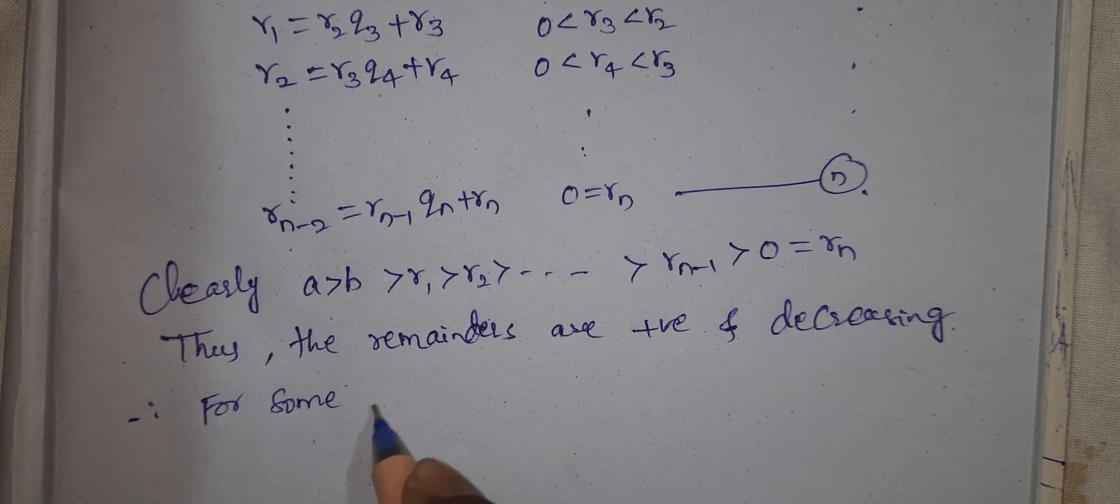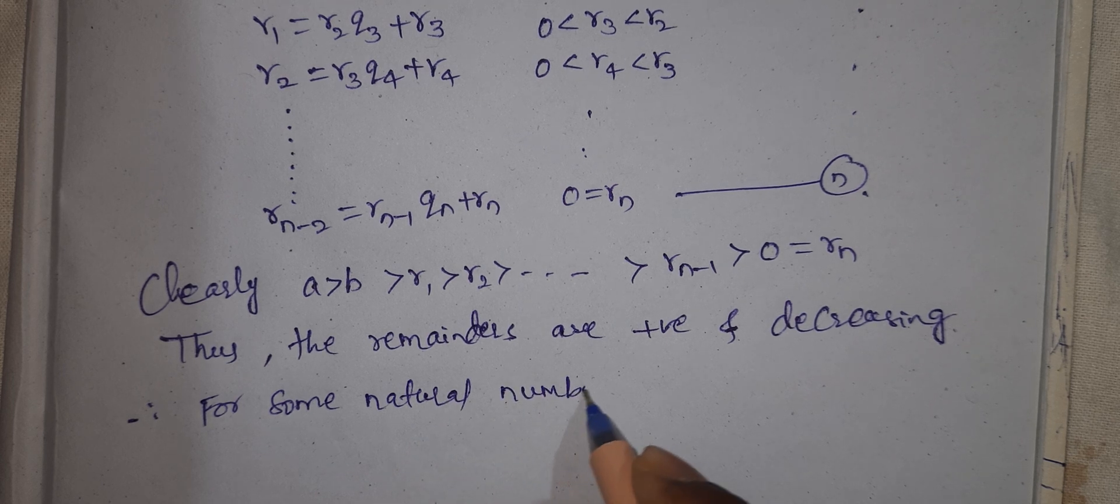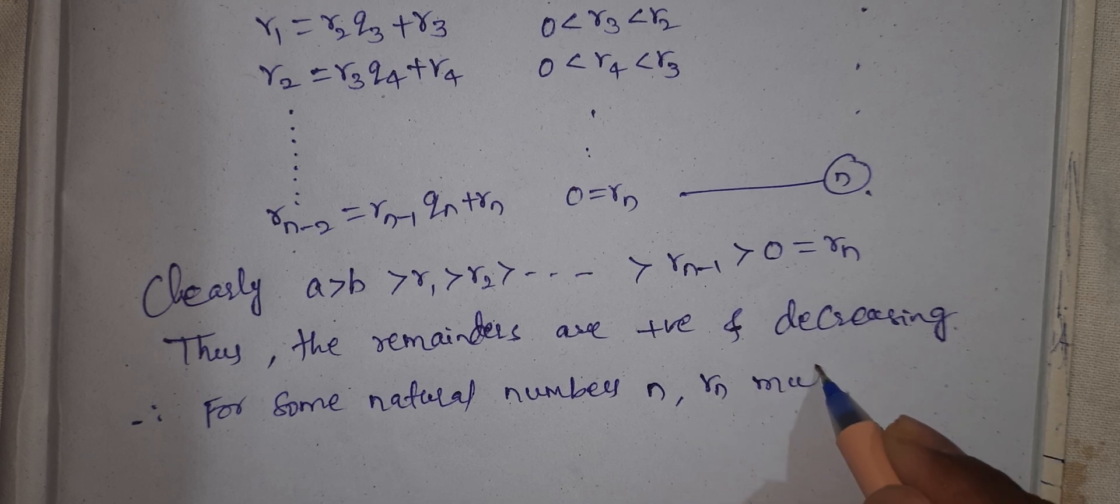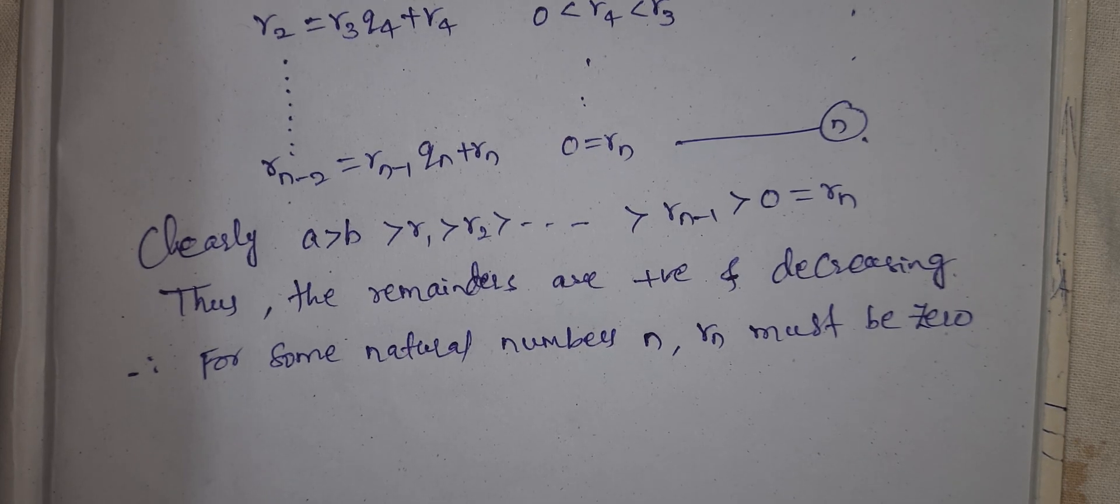Therefore, for some natural number n, Rn must be 0.